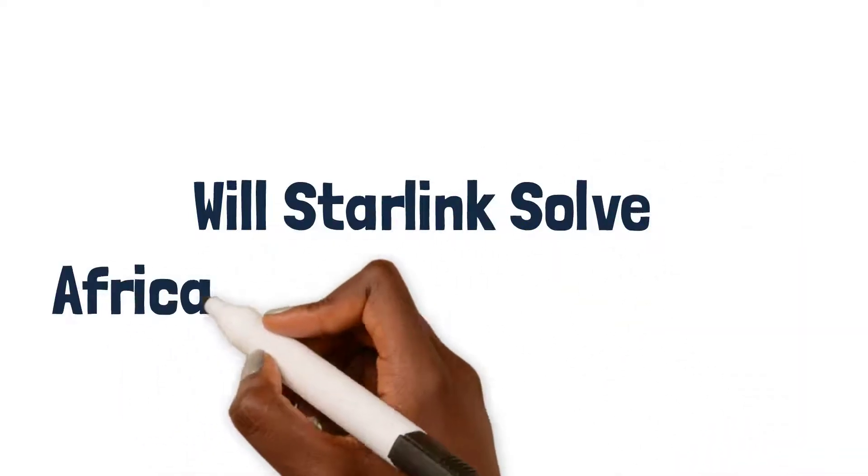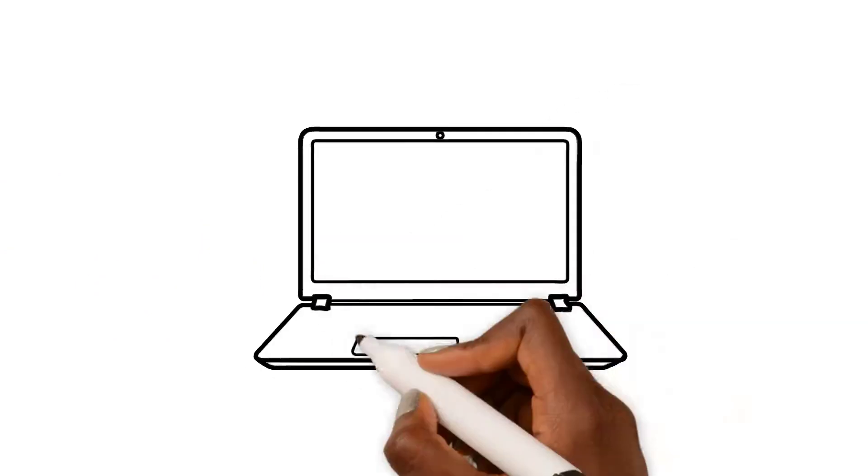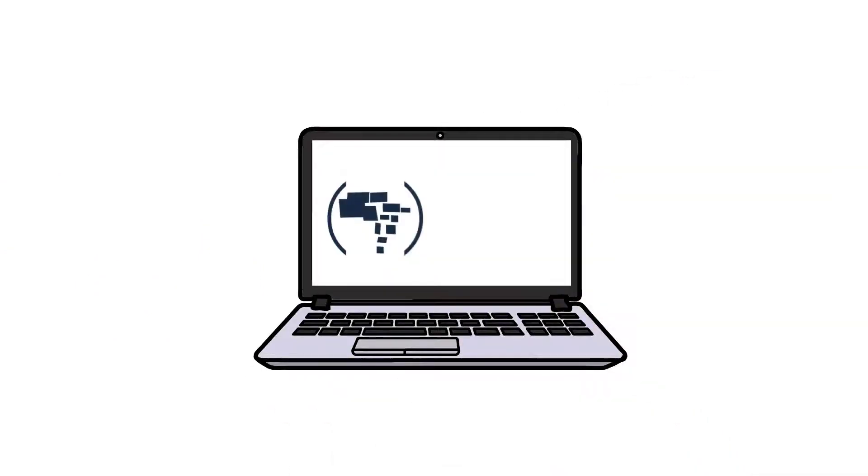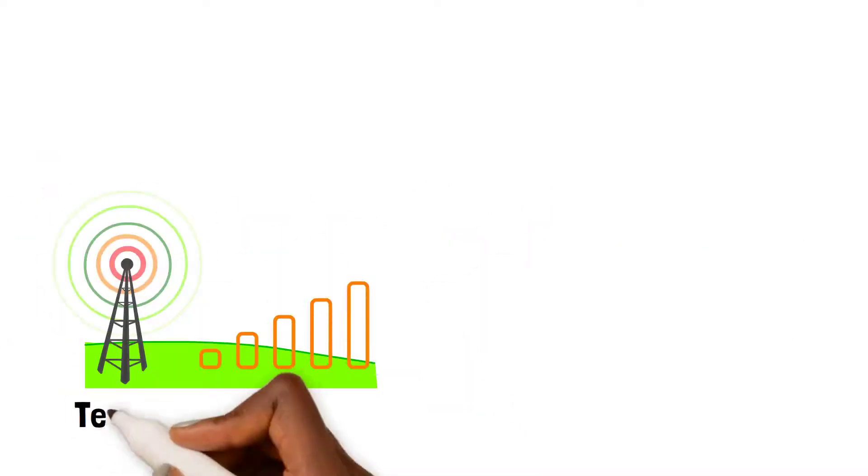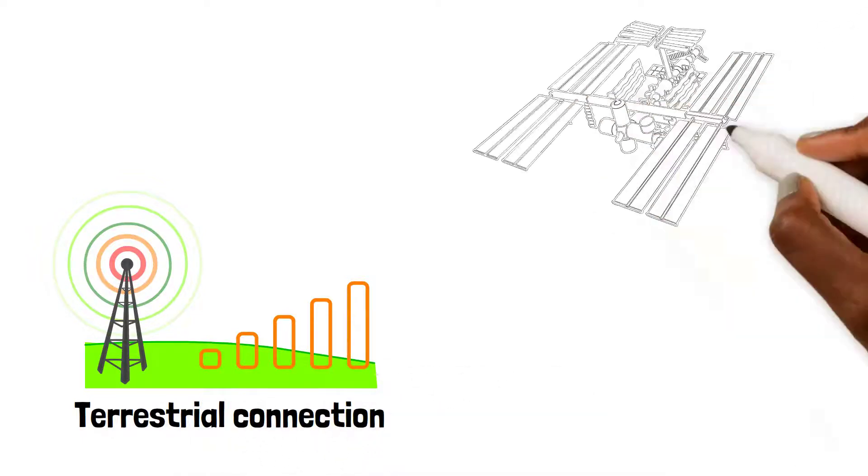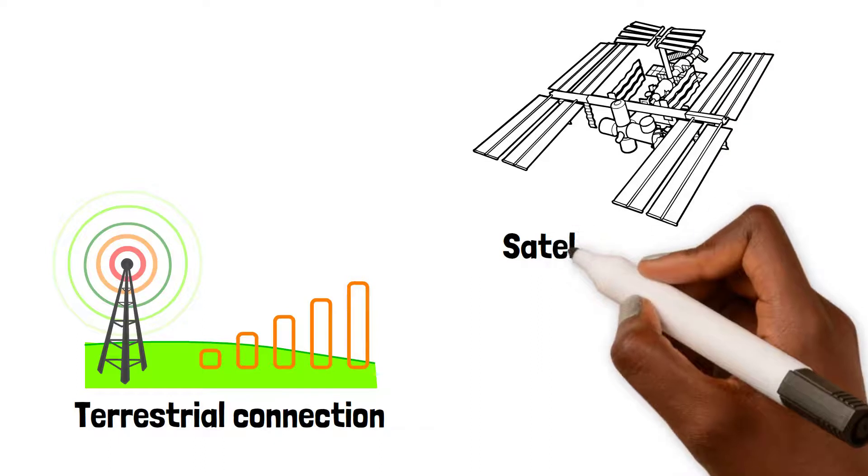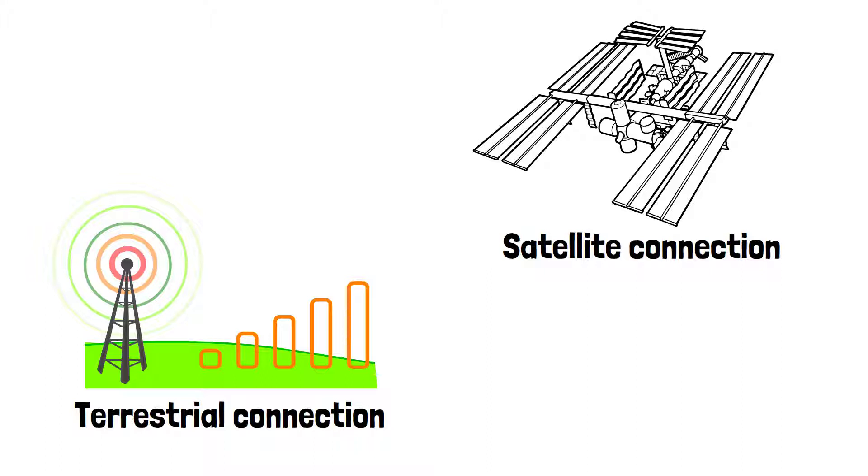Will Starlink solve Africa's internet problems? Right now you're watching this video over an internet connection. Chances are that connection is a terrestrial connection or satellite connection. The difference between the two is that the terrestrial connection is delivered from points closest to you on the ground, while satellite connections are delivered from points closest to you from satellites over the ground.